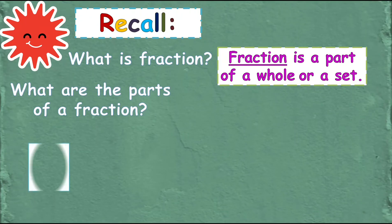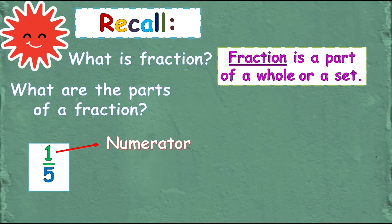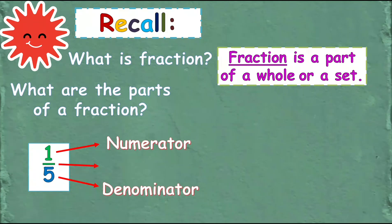Okay, so we have this fraction. It's 1 fifth. So, 1 is the numerator. And then, 5 is the denominator. And then, the line between 1 and 5 is what we call the fraction bar.